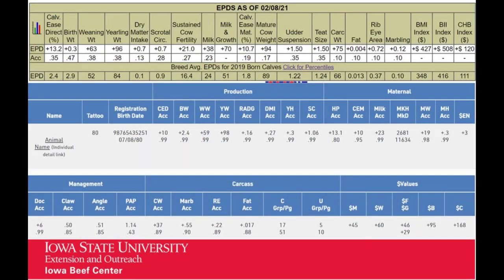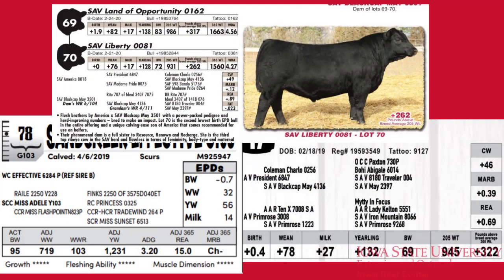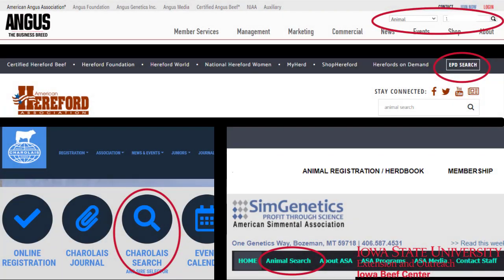When searching for a calving ease bull, easily the most important column on the paper is Calving Ease Direct EPD. Expressed as a percentage of unassisted births from that bull, you can find this column usually on the far left in front of birth weight. If the catalog you're looking at doesn't have CED, as it's often referred to, use the online breed search tool to find the EPDs of the bulls you're interested in.